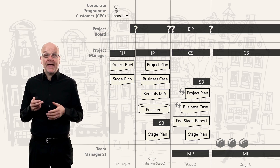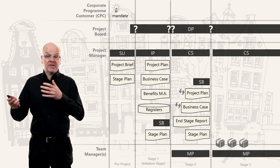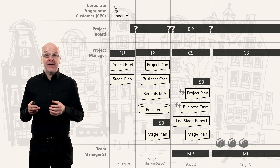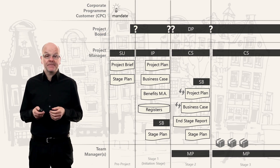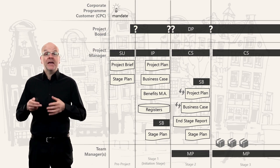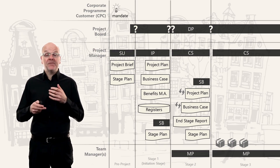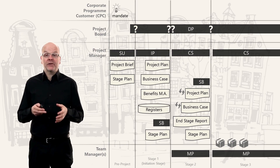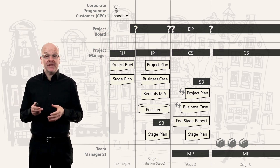They continue to hand out more work as it's completed, and they check that when they receive the finished products back, those products have been completed, signed off, and quality tested. Depending on the size of the project, the project manager can deal with one or more teams. The project manager hopes that everything will go as planned according to the stage plan.